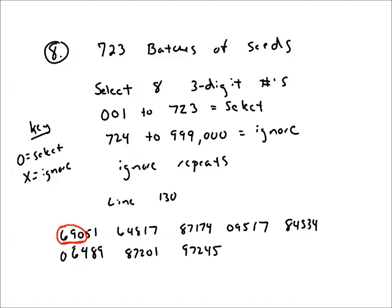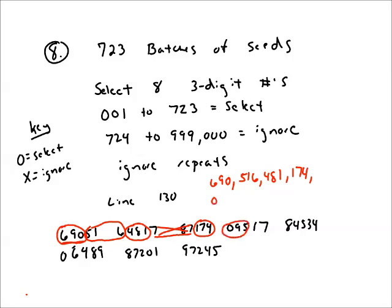We select, so we circle. 516, so okay I have 690. 516, yes that's in there. 481, that's in there. 787 is not between 001 and 723, so 787 we ignore. 174, 095, 178. Now if that was 174 I would have ignored that because I ignore repeats. It's already been selected. 453, and 406. Those are my eight batches of seeds and I put a stopping point there.